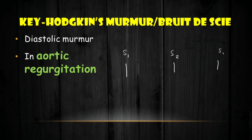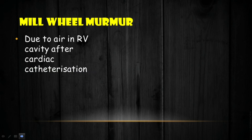Key-Hodgkin's murmur or Bruit de Shy is a diastolic murmur seen mainly in aortic regurgitation. With this, we have completed the named systolic and diastolic murmurs.